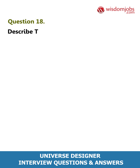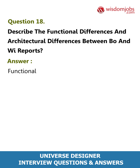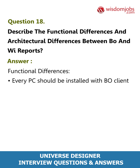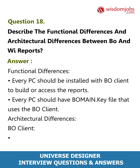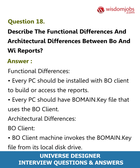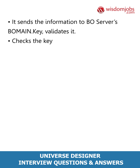Question 18: Describe the functional and architectural differences between BO and WebI reports. Answer: Functional differences — every PC should have the BO client installed to build or access reports, and every PC should have the BO license key file. Architectural differences — the BO client machine invokes the BO license key file from its local disk drive and sends the information to the BO servers, which validates the key against the repository.